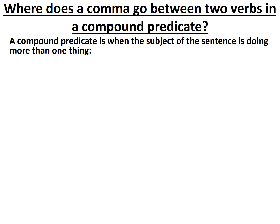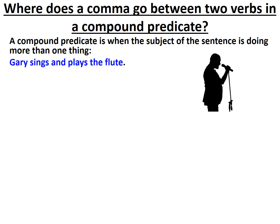Let me give you an example. Gary sings and plays the flute — very talented Gary. So he sings and he plays the flute. I guess he doesn't do both those things at the same time. But it would be incorrect if I broke this sentence up like this: Gary sings, and plays the flute.